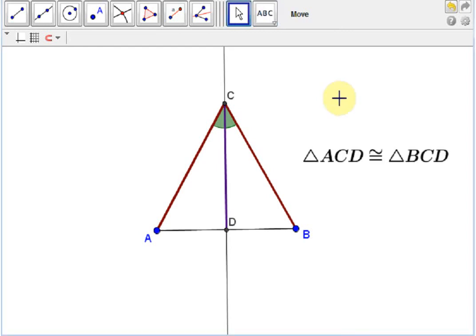Since these two triangles are congruent, corresponding sides of congruent triangles are congruent. In particular, the segment AD is congruent to the segment DB, but that's the definition of segment bisector.